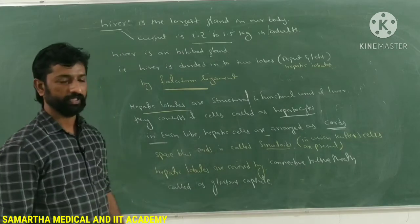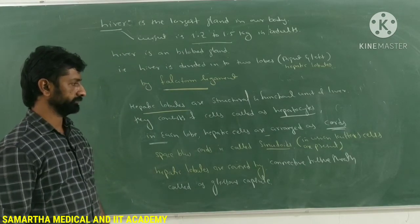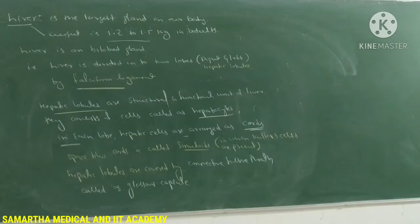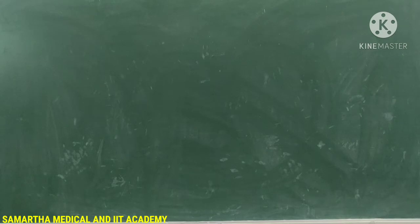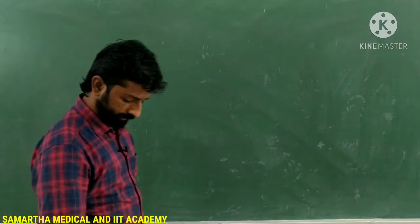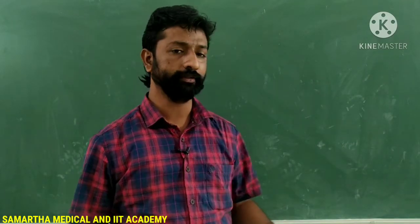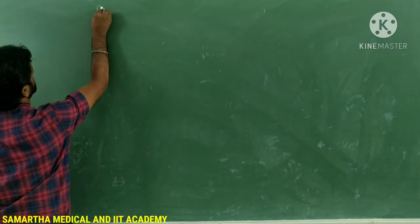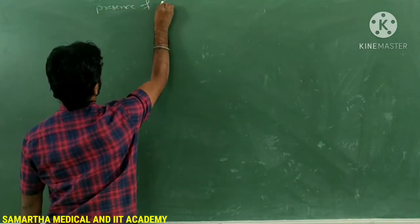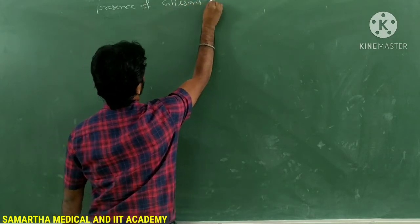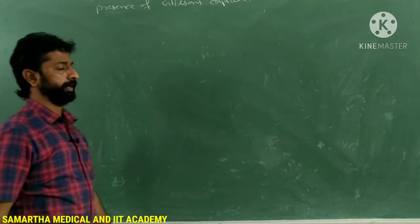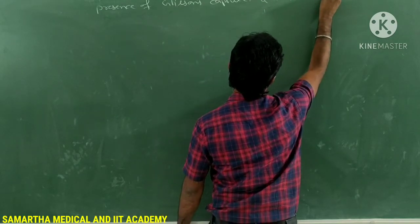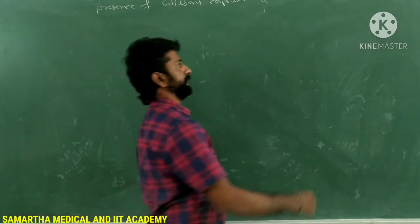What is the function of Kupffer's cells? They are phagocytic in nature. The presence of Glisson's capsule as a protective layer around the hepatic lobes, and Kupffer's cells in the sinusoids as phagocytic cells, are characteristic features of mammalian liver.